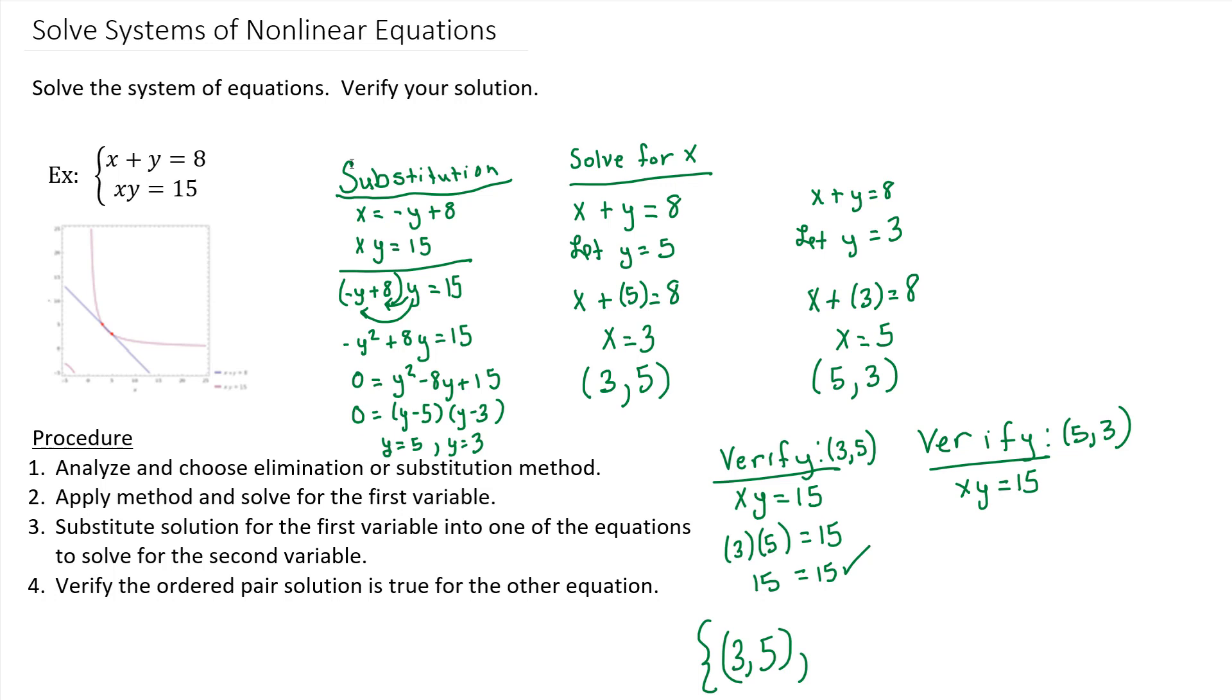Now if I check 5, 3, we're saying X is 5, Y is 3. Does that equal 15? Well, yes, 15 equals 15 is true. So that means the ordered pair that I just checked, 5, 3, is also part of my solution set.